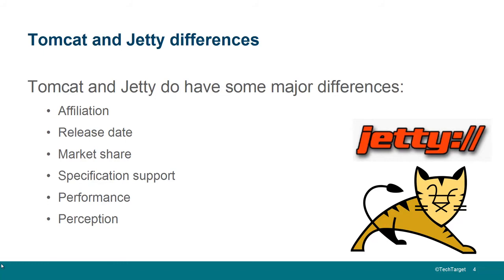Performance is another area where Jetty has always taken a strong focus. On specification support, Tomcat is often the reference implementation for the servlet and JSP specification, and even now, when a new specification comes out, Tomcat works very hard to implement it. Jetty, on the other hand, prioritizes important features that their users want over chasing the latest specification.